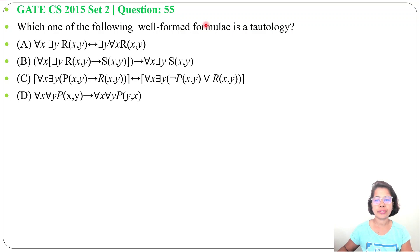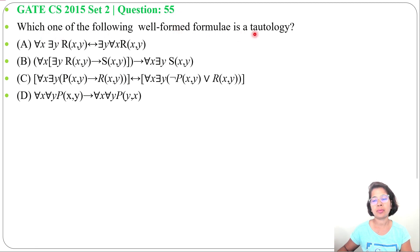Let's solve one previous question of mathematical logic. This question was asked in GATE CS 2015, set 2, question number 55: which one of the following well-formed formulae is a tautology? Four options are given.